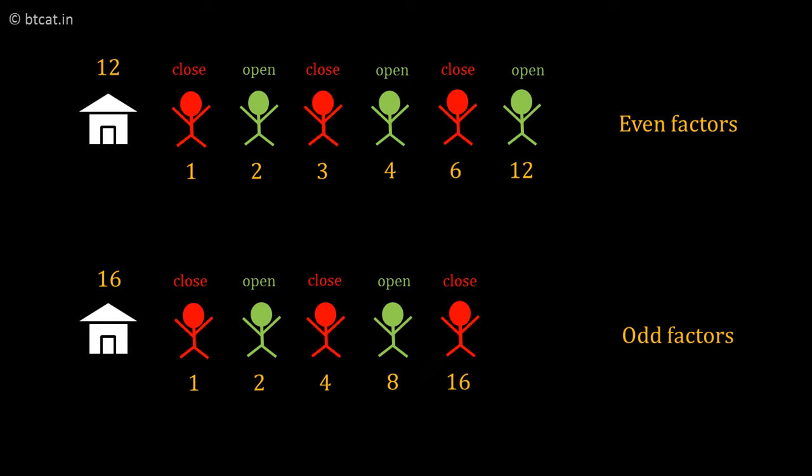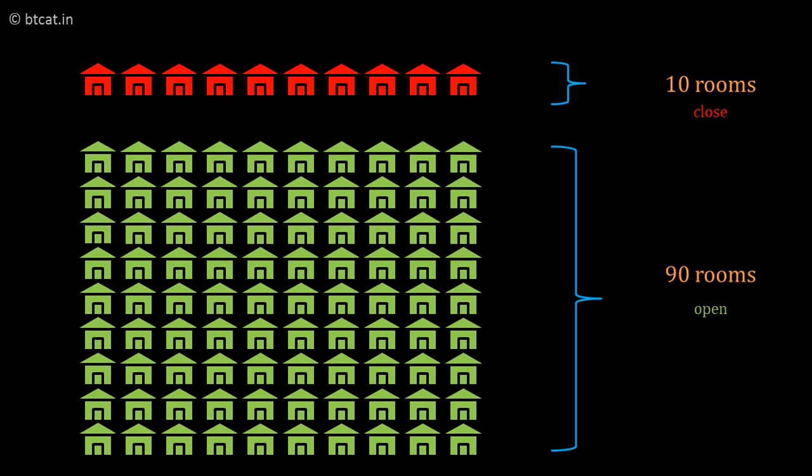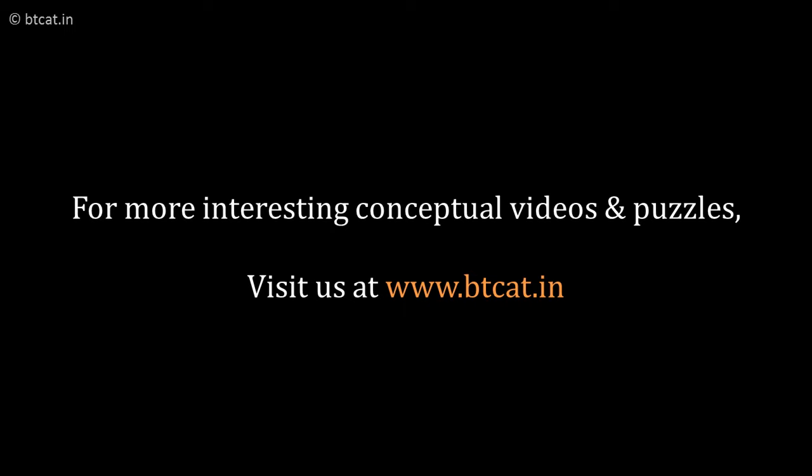Since numbers with an odd total of factors are perfect squares, all perfect squares from 1 to 100 will be closed and the remaining rooms will be open. There are 10 perfect square numbers from 1 to 100 — 1², 2², up to 10² — so 10 rooms are closed and 90 rooms are open. This is the perfect square concept.